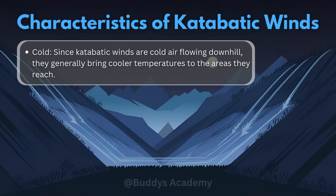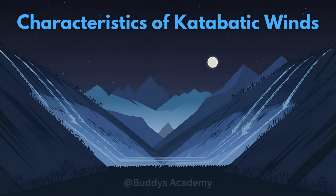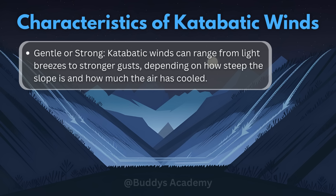Now let's look at some characteristics of katabatic winds. The first characteristic would be the temperature of the wind itself — remember it's going to be a cold wind. Since katabatic winds are cold air flowing downhill, they generally bring cooler temperatures to the areas they reach. The second characteristic would refer to the strength of the wind, which can either be gentle or strong. Katabatic winds can range from light breezes to stronger gusts, depending on how steep the slope is and how much the air has cooled.